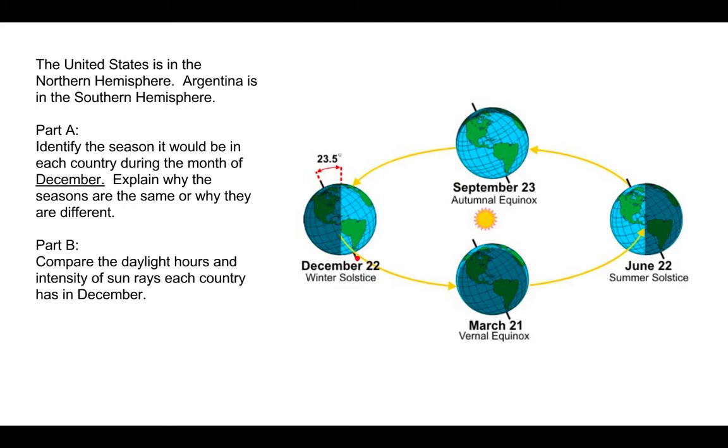Part B: compare the daylight hours. For the northern hemisphere, which is in winter, the daylight hours are short. Wintertime we have short days. But down here for Argentina, since they are in summer, daylight hours are long. In summertime, the sun seems to be around a lot longer.